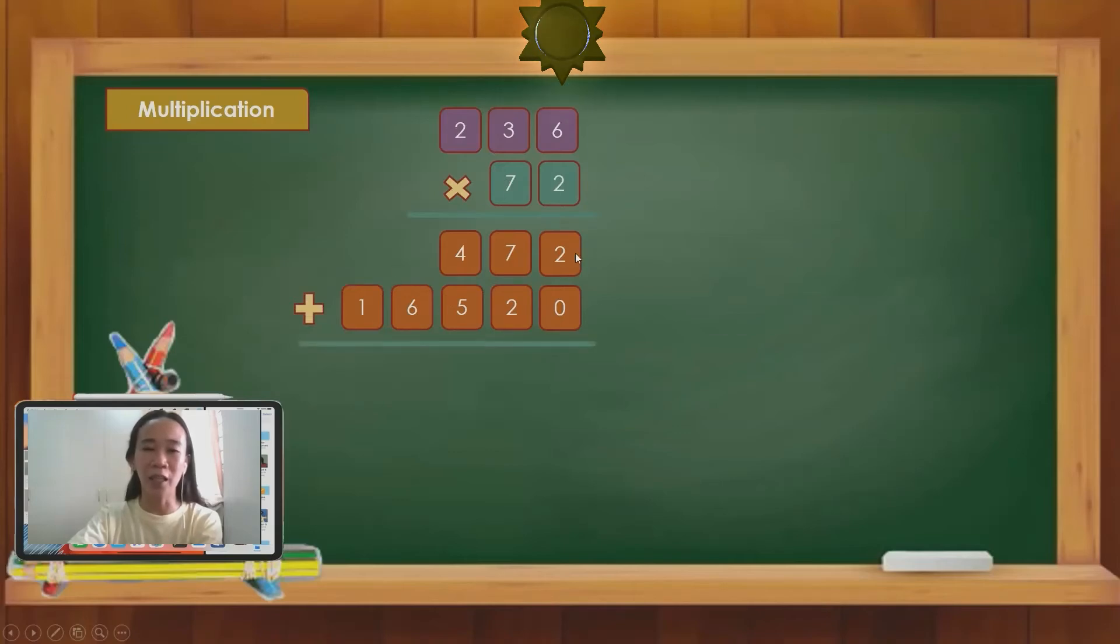So this part, 472, is 2 times 236. 16,520 is 70 times 236. Now we are going to add 2 plus 0, 2. 7 plus 2, 9. 4 plus 5 is 9. Bring down 6 and bring down 1. So our answer here is 16,992.